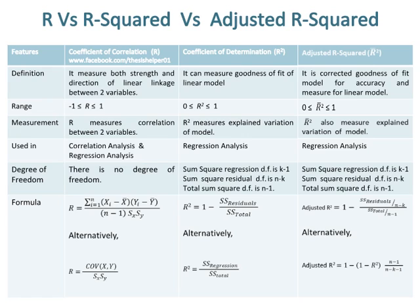The coefficient of correlation is used in both correlation analysis and regression analysis, while R-squared and adjusted R-squared are both used in regression analysis only. There are no degrees of freedom in the coefficient of correlation, while the degrees of freedom of R-squared and adjusted R-squared are the same.